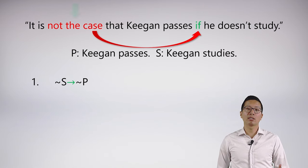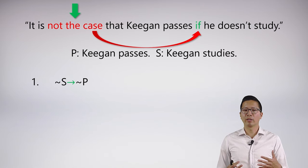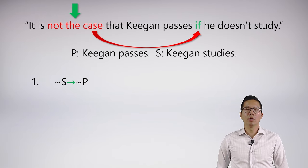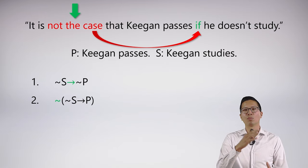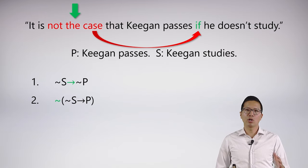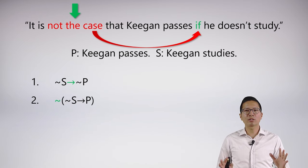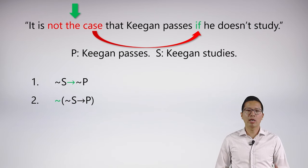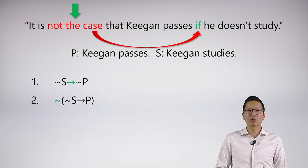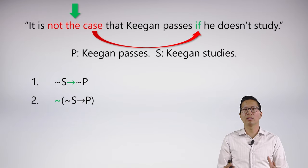If we switch and consider the case that the negation is actually modifying the conditional, well then the conditional cannot be the main connective because it's being modified by something else. So the negation has to be the main connective here and we get a different symbolization. We have to make sure the negation is the main connective and it is modifying the conditional — and if you're rusty on this, you can look back at the syntax stuff from unit two. The negation S is still the antecedent of the conditional, but P is the consequent and the negation is modifying the entire conditional.